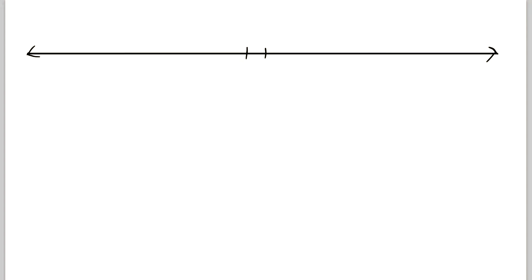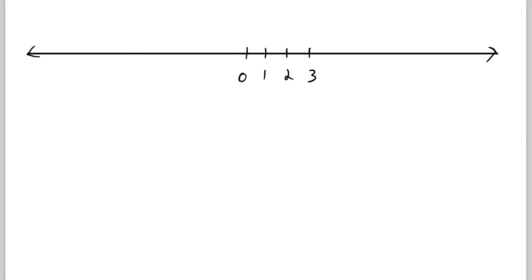So for example, let's put some marks down here on the real number line. Let's say this is zero, one, two, and three. Of course, all the negative numbers are out here to the left. And let's say we want an easy way to write out the set containing all numbers from zero, including zero, up to two, and including two — so all of the numbers in that line there, plus the boundaries.